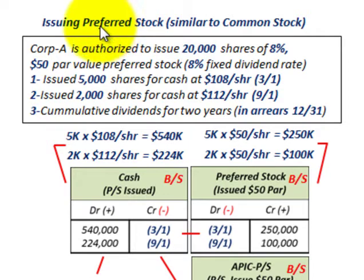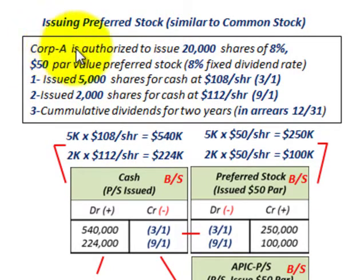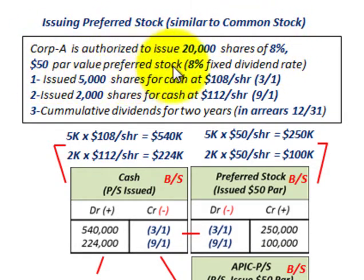Here we're going to be looking at issuing preferred stock. This is similar to issuing common stock, but with preferred stock we have to set up its own separate equity account. For example, a corporation is authorized to issue twenty thousand shares of an eight percent, fifty dollar par value preferred stock.